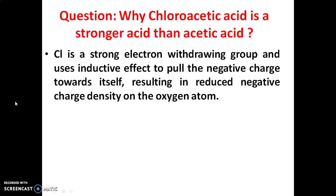The question: why is chloroacetic acid a stronger acid compared to acetic acid? In chloroacetic acid, one hydrogen is replaced by one chlorine atom. Chlorine is a strong electron-withdrawing group and uses the inductive effect to pull the negative charge towards itself.